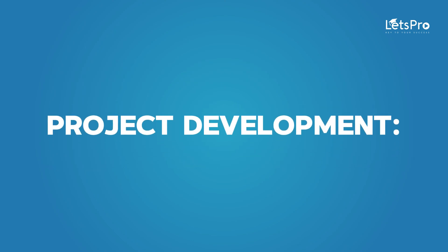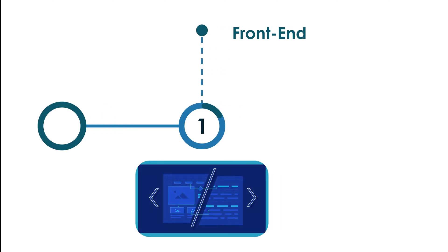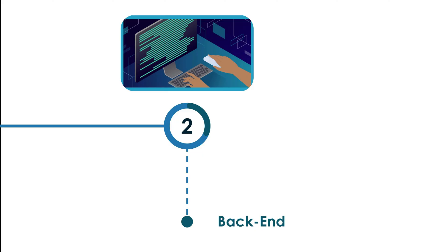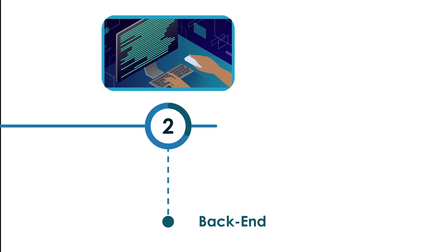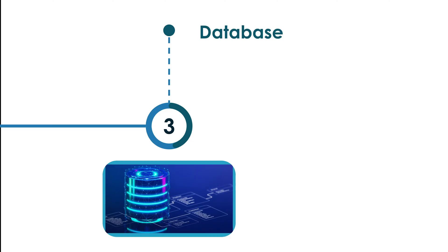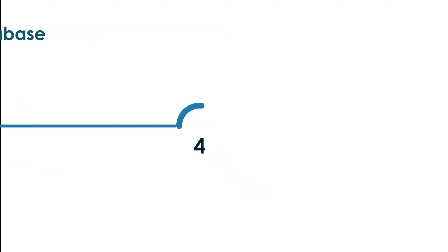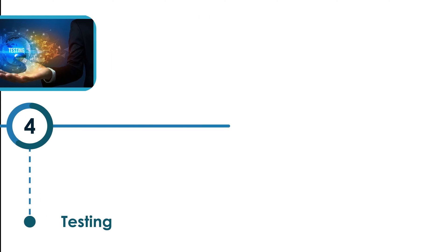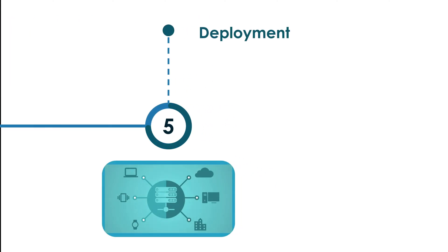For project development: Front-end — use HTML, CSS and JavaScript for UI design, with frameworks like React.js for better interactivity. Back-end — use PHP, Node.js or Django for server-side programming. Database — store user data in MySQL or MongoDB. Testing — ensure responsiveness on various devices and browsers. Deployment — deploy your app on a platform like Heroku or AWS.